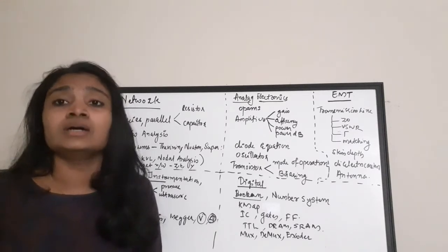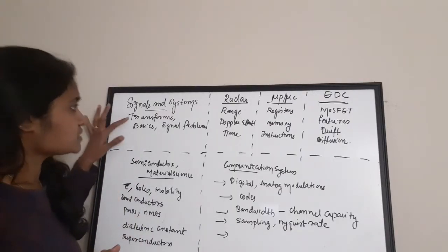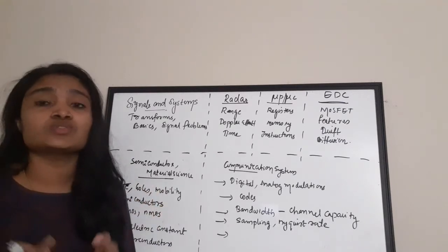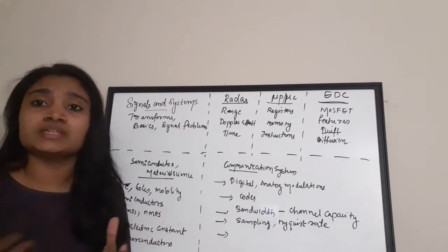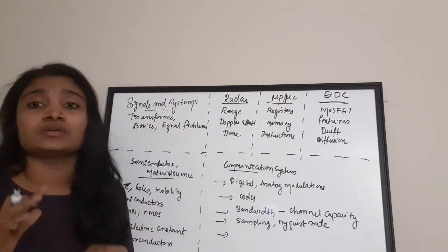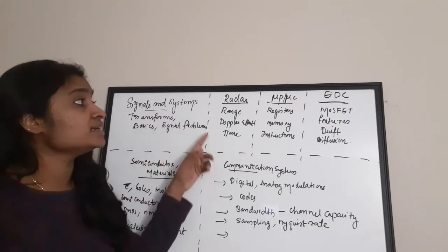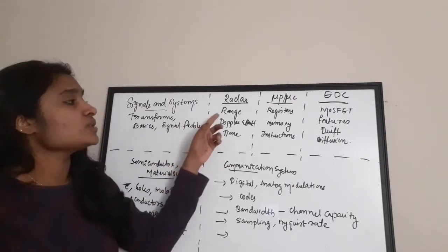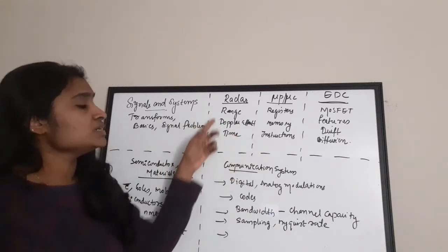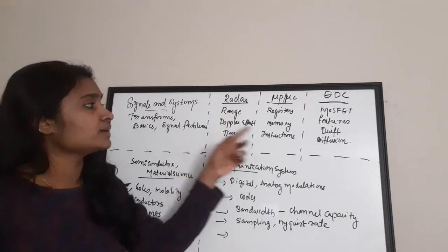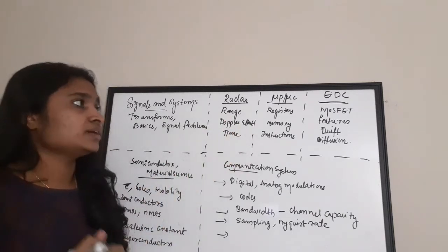For Signals and Systems, concentrate on transforms — Laplace transform, Fourier transform, and Z-transform; only basics are required. Signal problems can come from various signals like impulse signal or unit step signal. Another important area is Radar — concentrate on the radar range equation, Doppler effect, and timing. Questions on calculating Doppler frequency appear in various question papers.